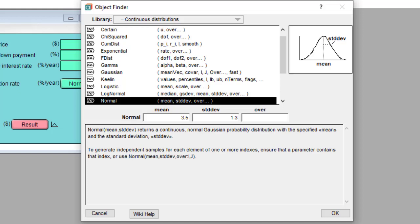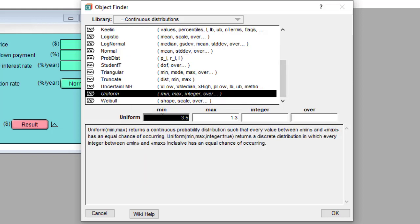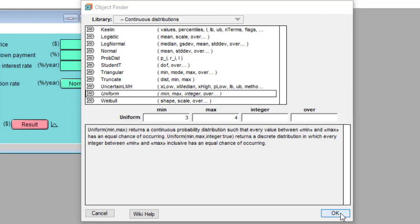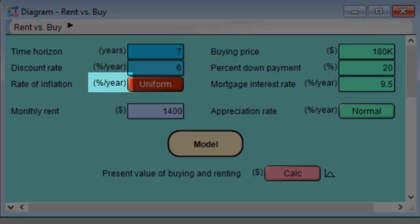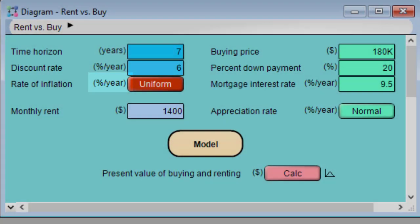Right now, it says we have a normal distribution with a mean of 3.5 and a standard deviation of 1.3. So I'm going to change that to be a uniform distribution, where all possible values between 3 and 4 are equally likely.